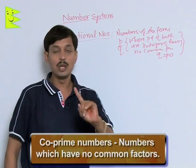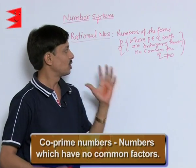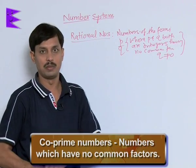...means only one is the number which is common between them. Such numbers are known as co-prime numbers.